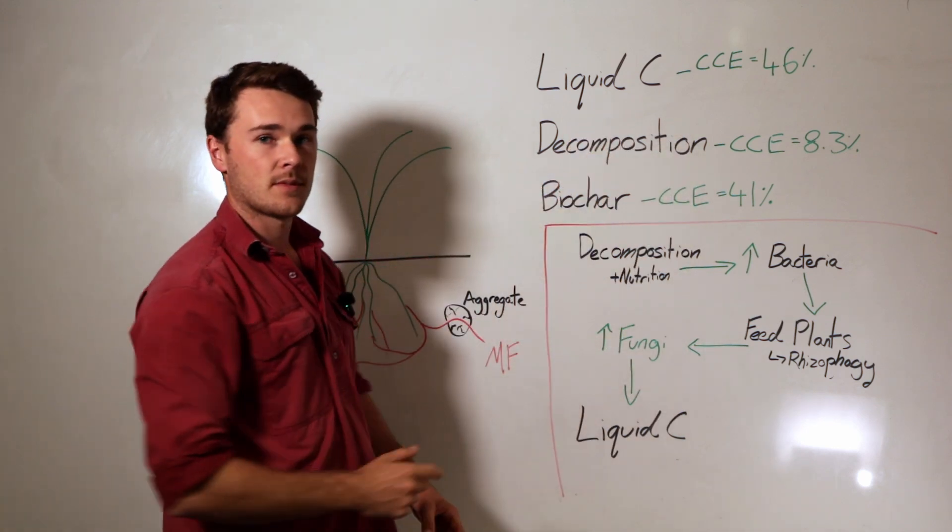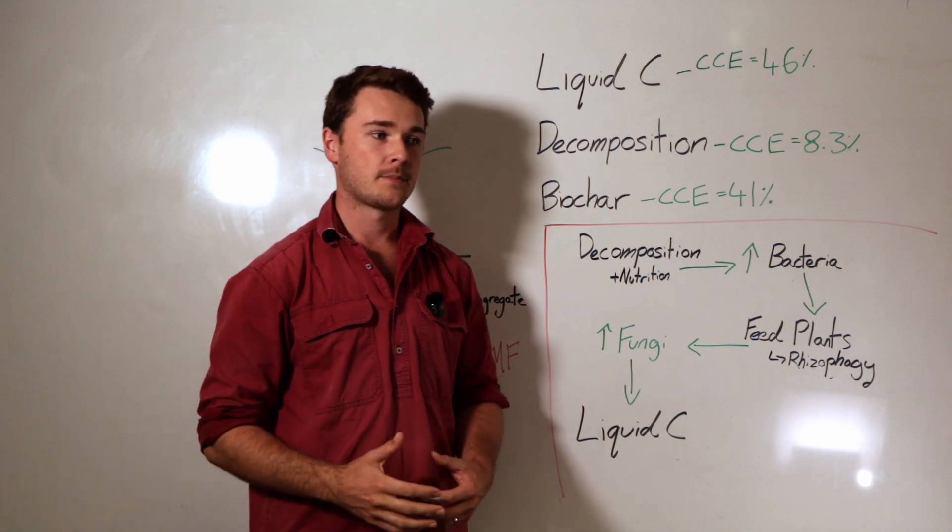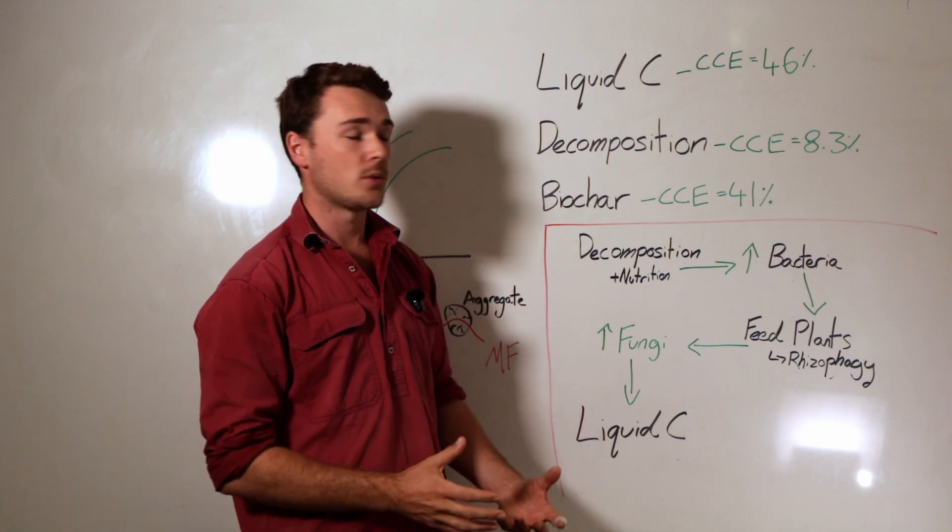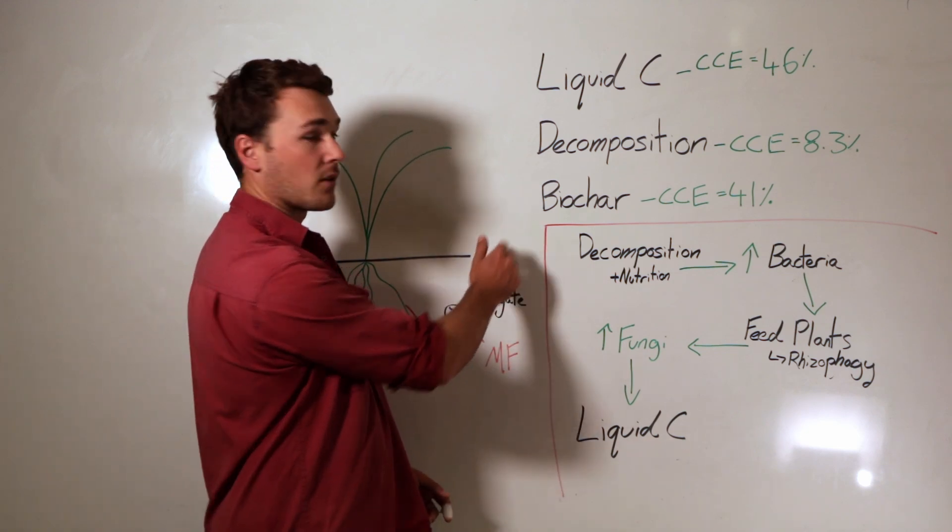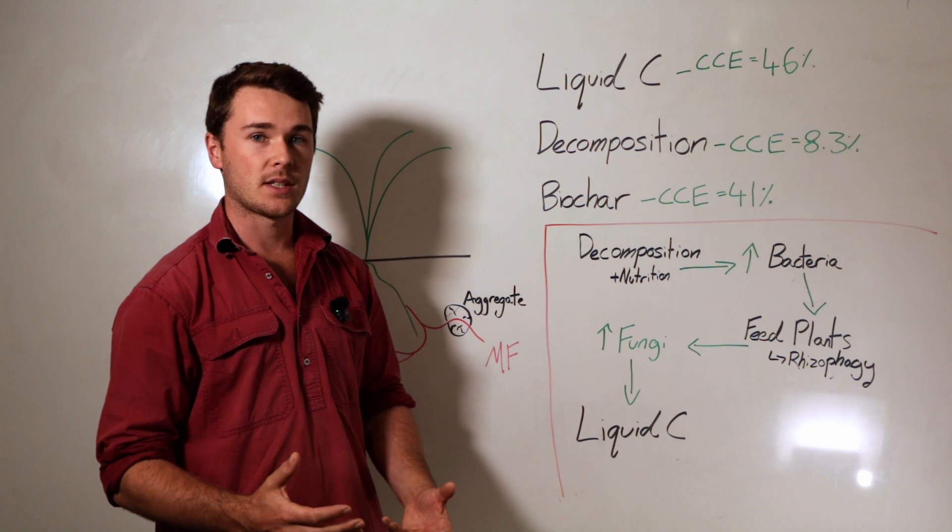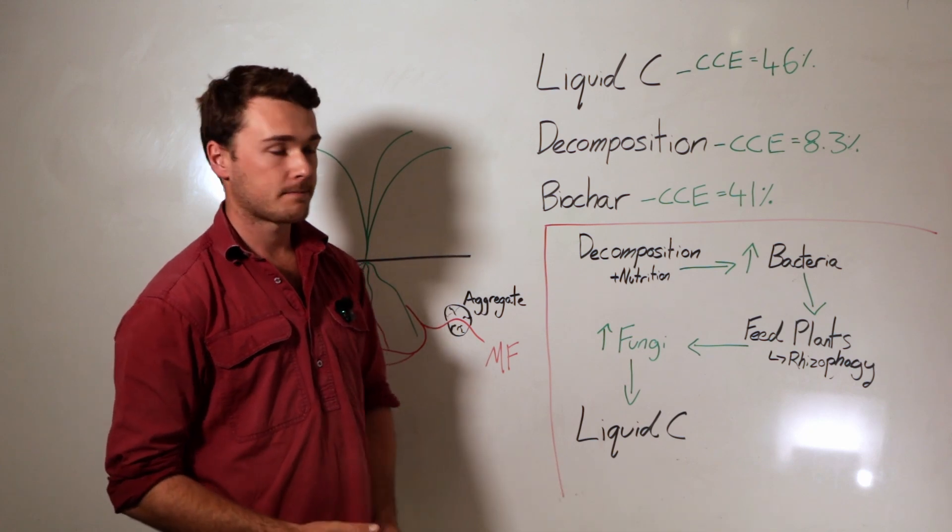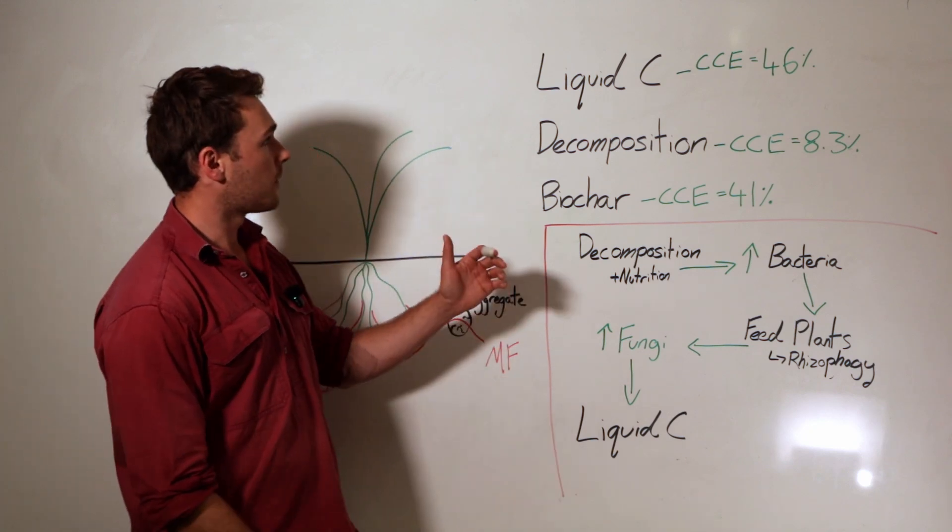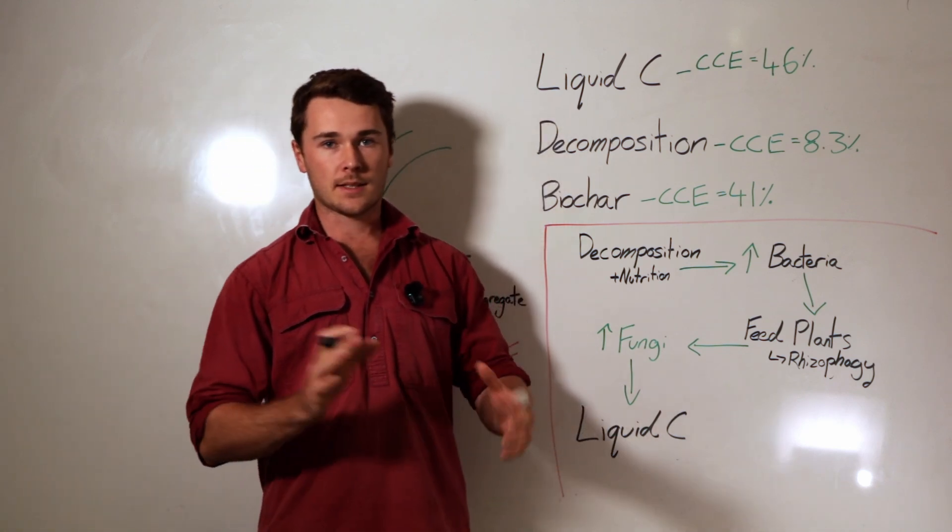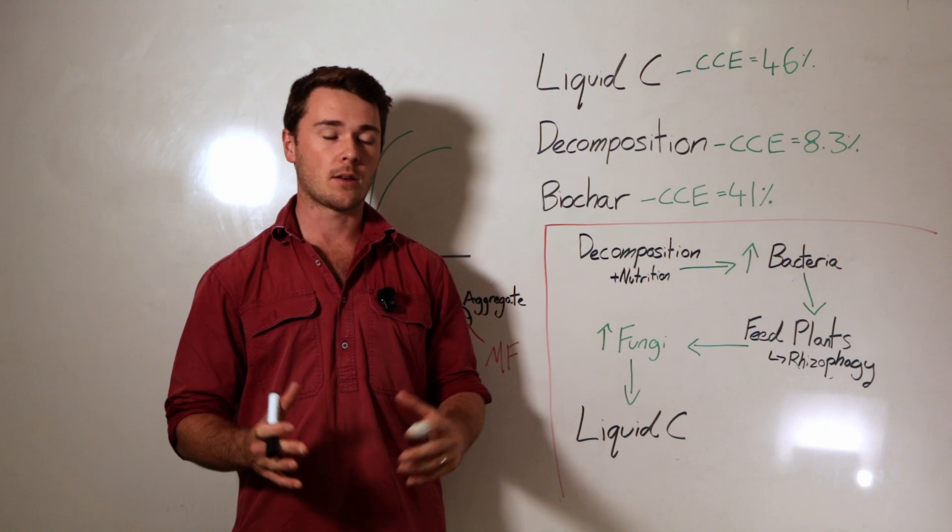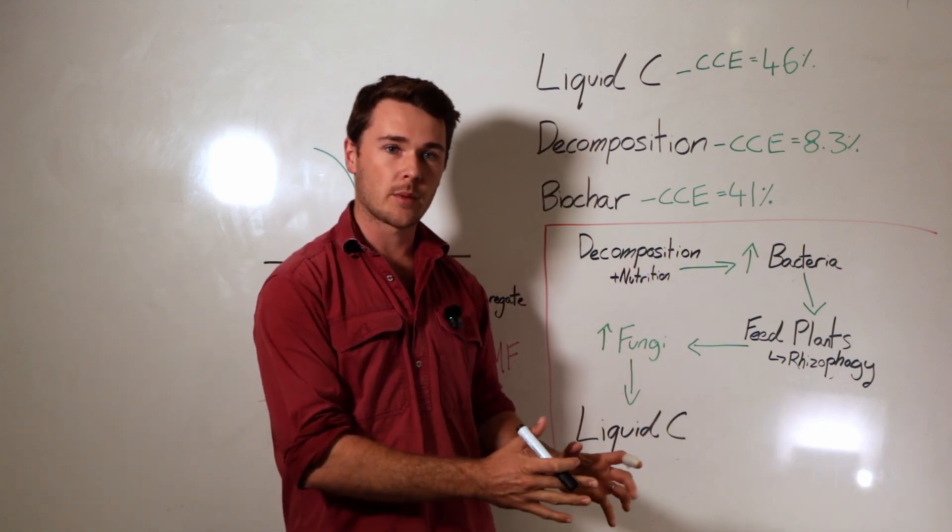Then we have decomposition, where litter or biomass gets converted into soil organic carbon with an efficiency of about 8.3 percent. Then you have the application of biochar, which has an efficiency of about 41 percent. The aim of the game is to maximize soil organic carbon, but more importantly build soil health.